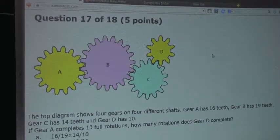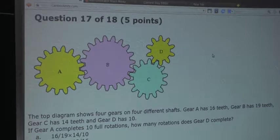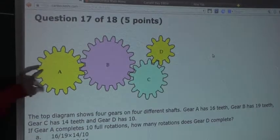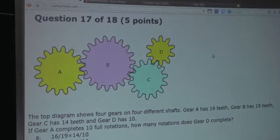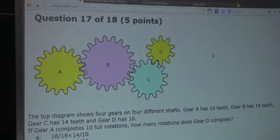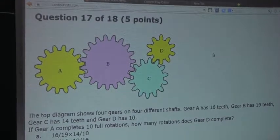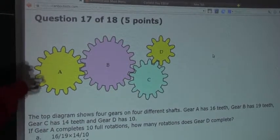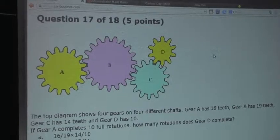First of all, we know from the question that gear A has 16 teeth, and gear A completes 10 full rotations. So what we want to find out is how many teeth of gear A pass this point.